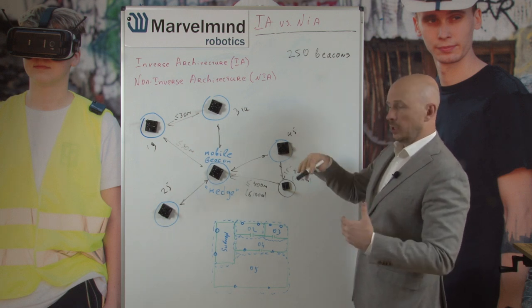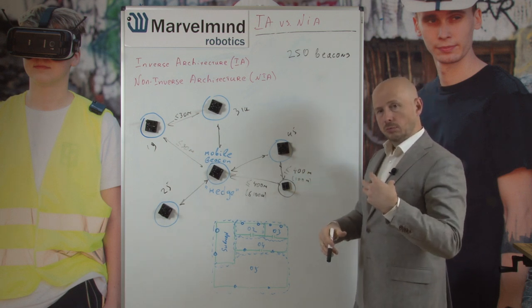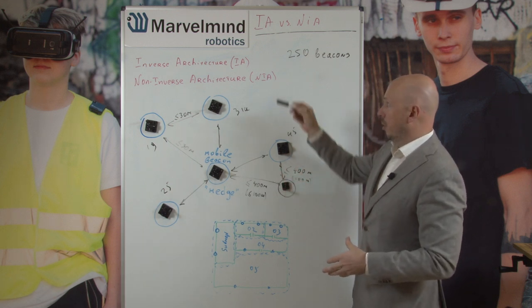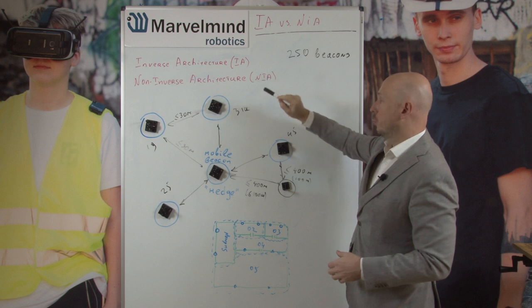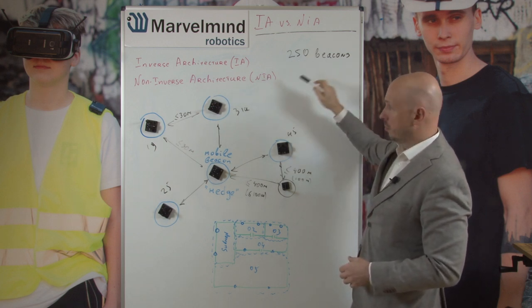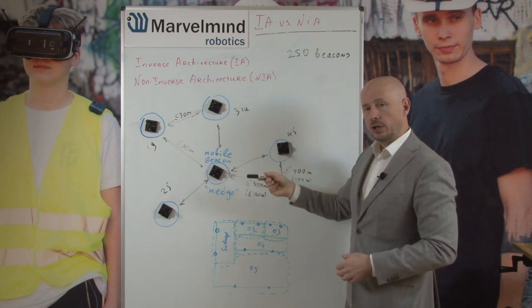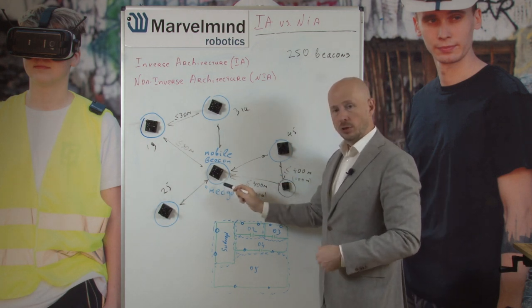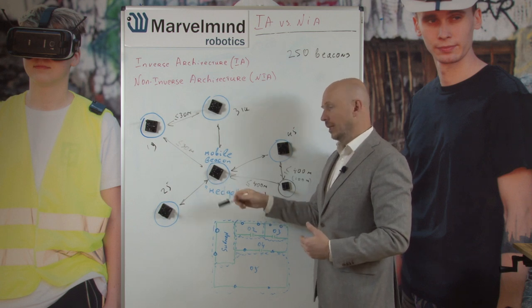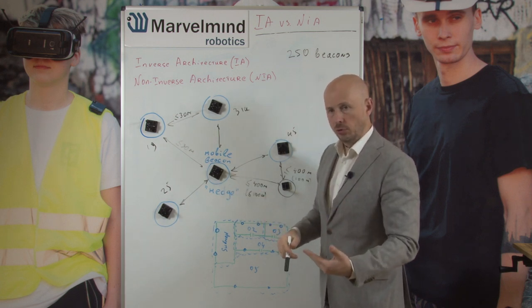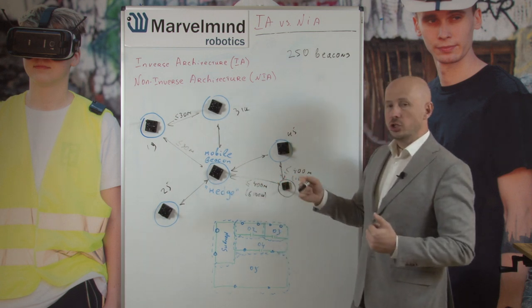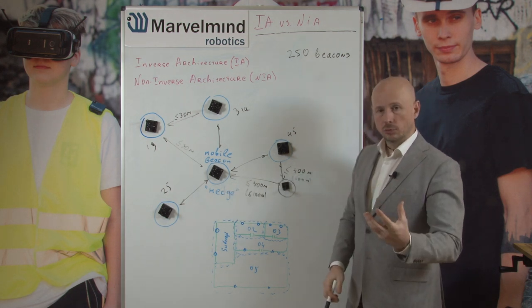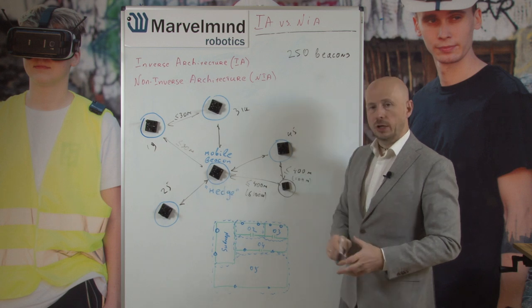To summarize: both systems support up to 250 beacons (stationary plus mobile combined). Inverse architecture is mainly used when you have multiple mobile objects like people and location update rate is important. Non-inverse architecture is used when you have noisy mobile objects like drones.